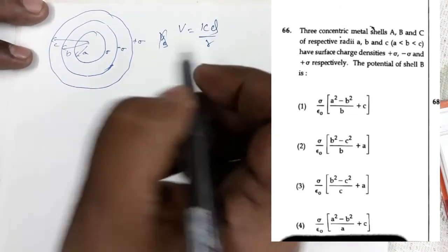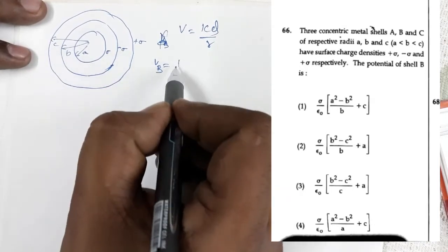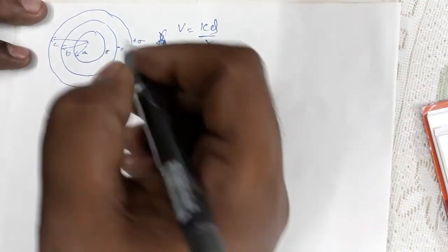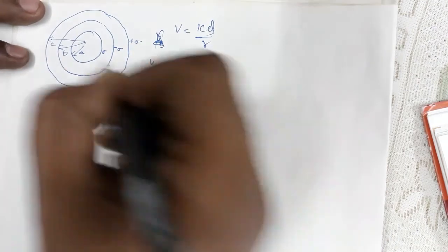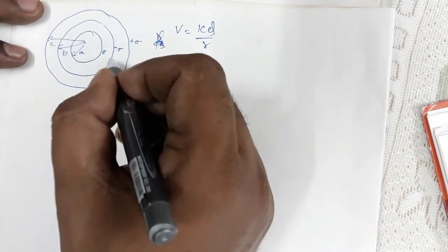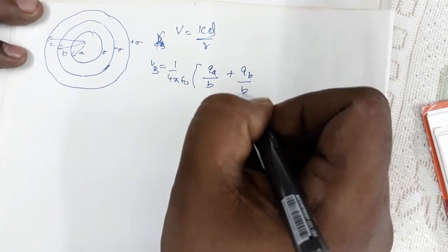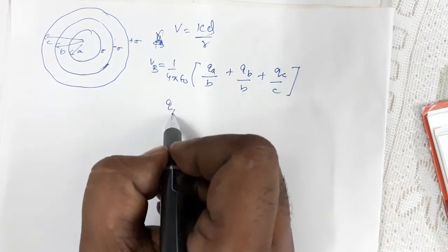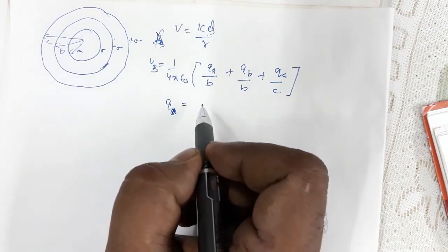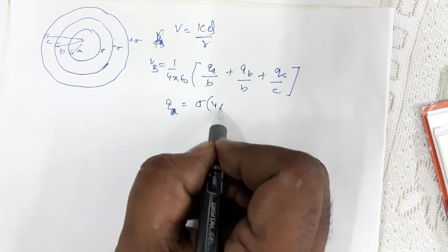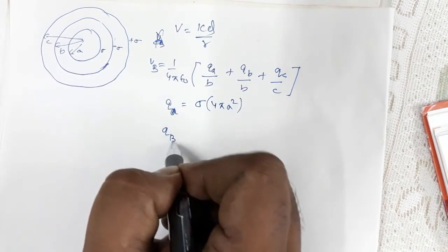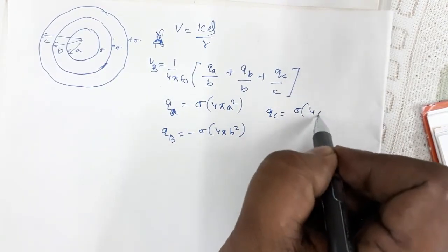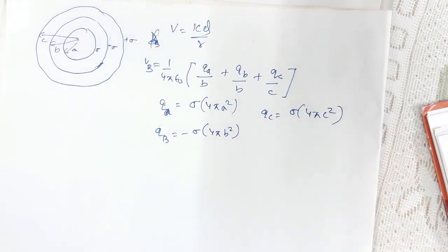To calculate the potential at b: V_b = (1/4πε₀) × [Q_a/b + Q_b/b + Q_c/c]. The charges are: Q_a = σ·4πa², Q_b = −σ·4πb², and Q_c = σ·4πc².